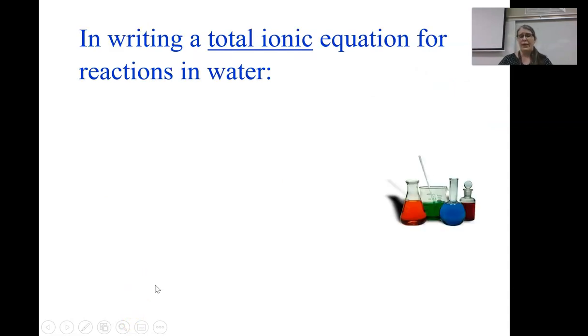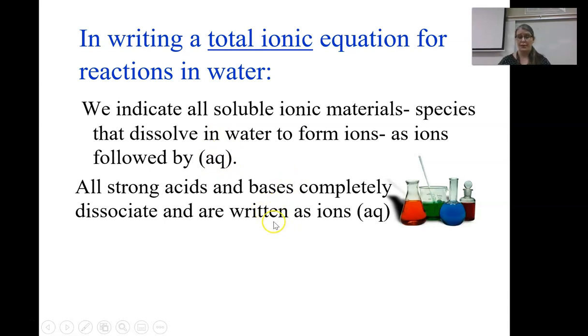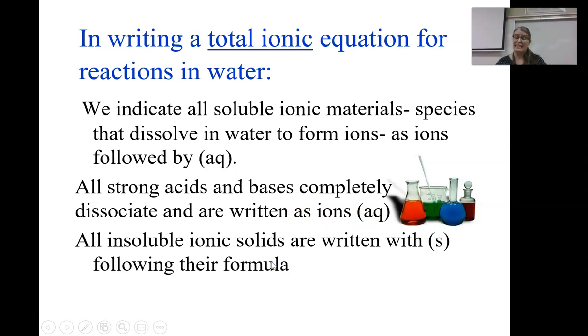What we want to do now is to write a total ionic equation. And there's some things that we want to remember here. There are a couple that are really relevant right now. All soluble ionic materials, things that dissolve, are written as their separate ions, followed by the aq to show that they are dissolved in water. All strong acids and bases completely dissociate. And so they will be written as their individual ions, followed by aqueous. And all insoluble solids will be written with the S following their formula. And they will be written together. So our barium sulfate precipitate will be written as BaSO4 with the solid to indicate that it's our precipitate.